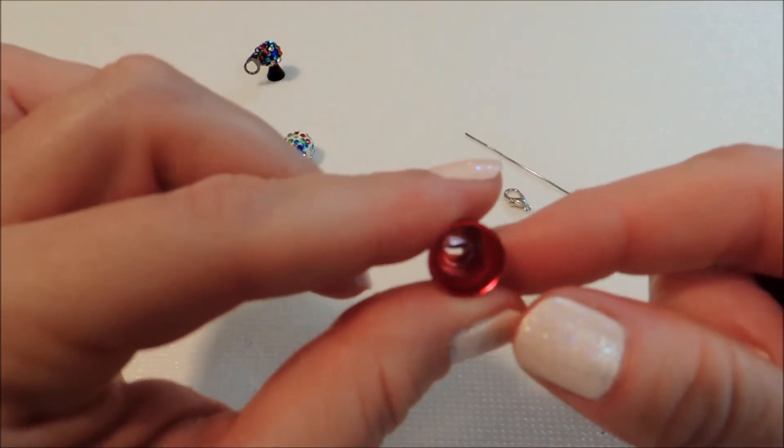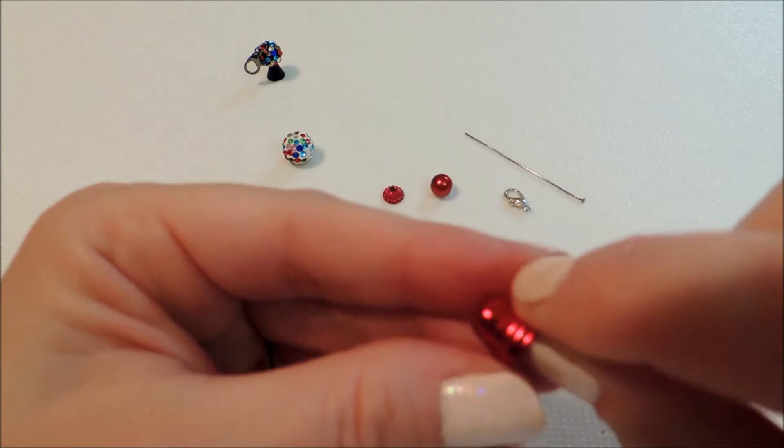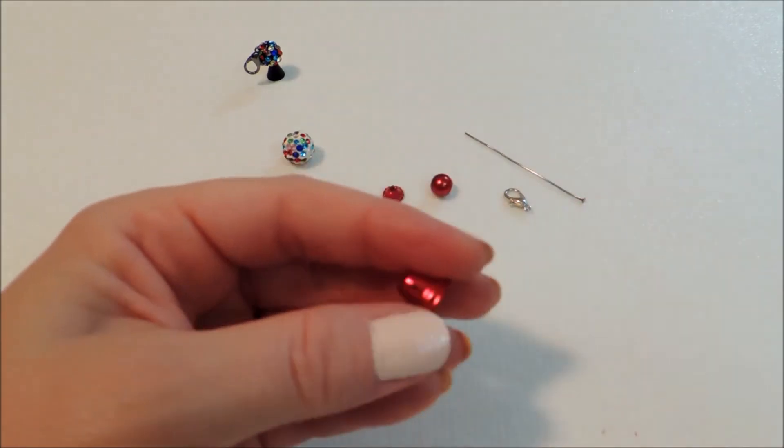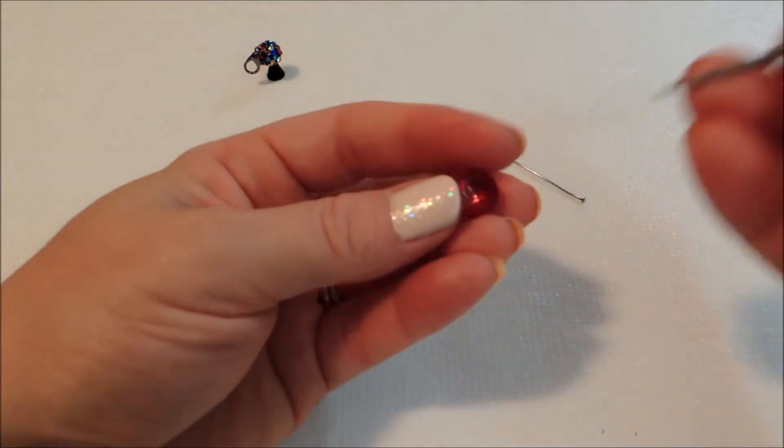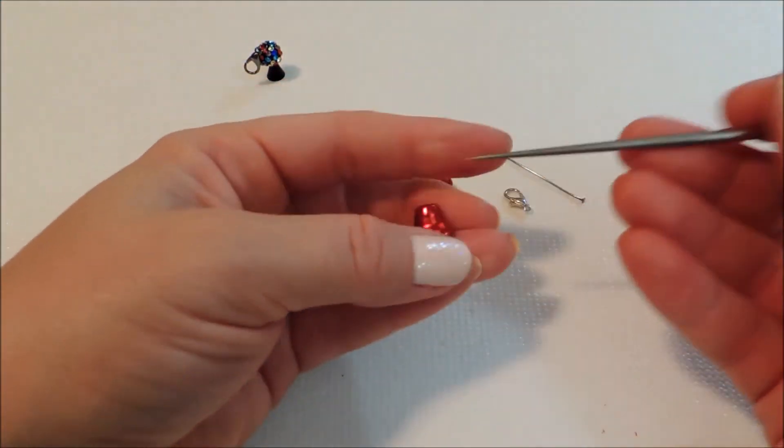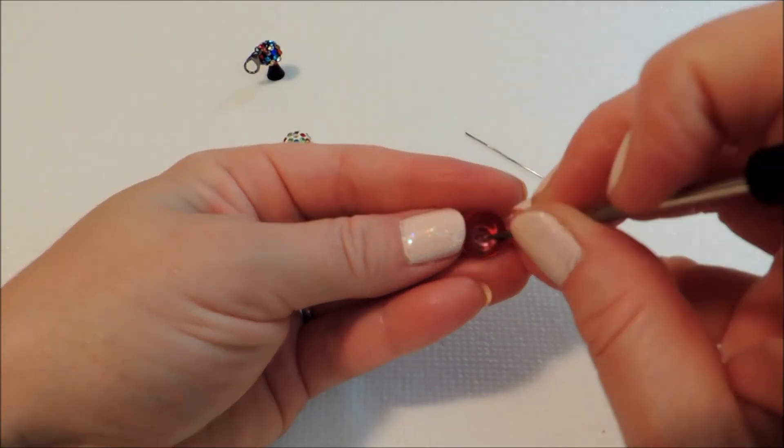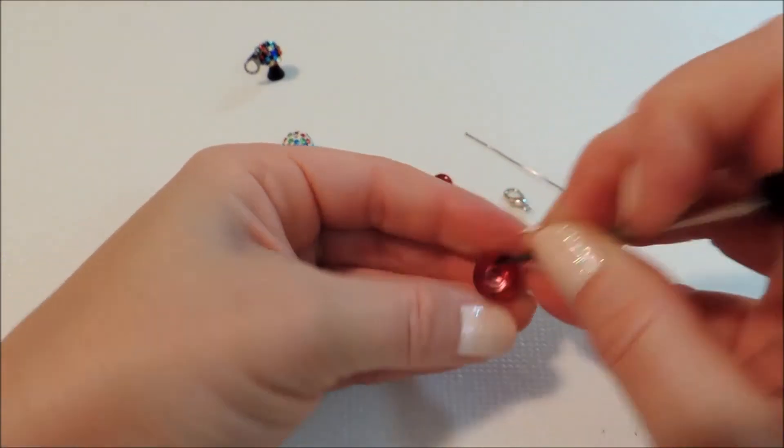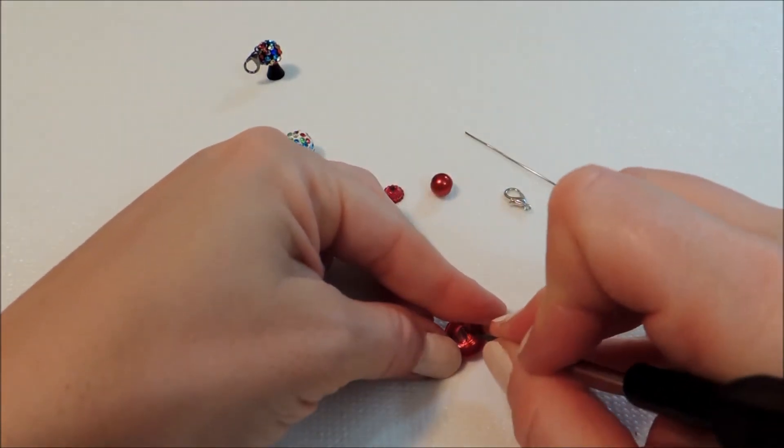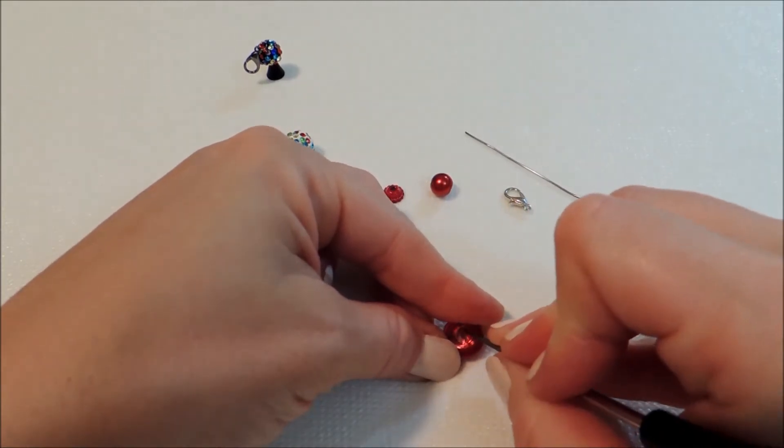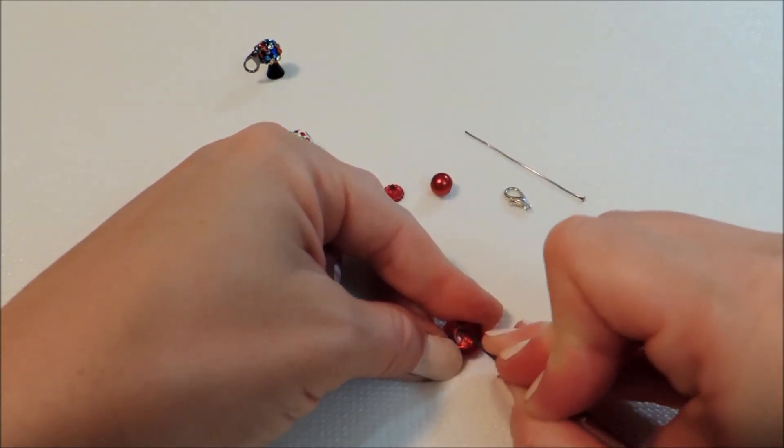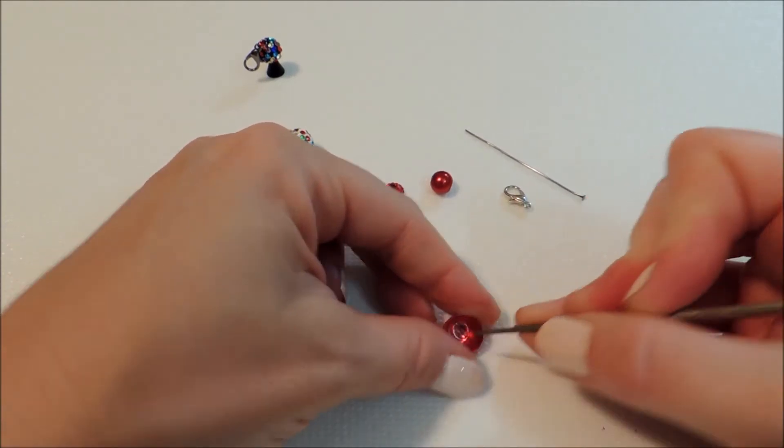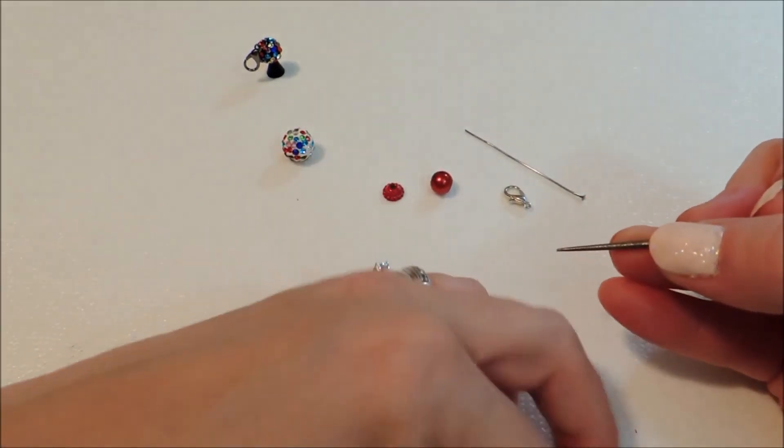Then what I did was just kind of take my bead reamer or any sort of narrow tool that you can reach up in there with and kind of press that slot back together a little bit so that it won't wobble too bad on us.